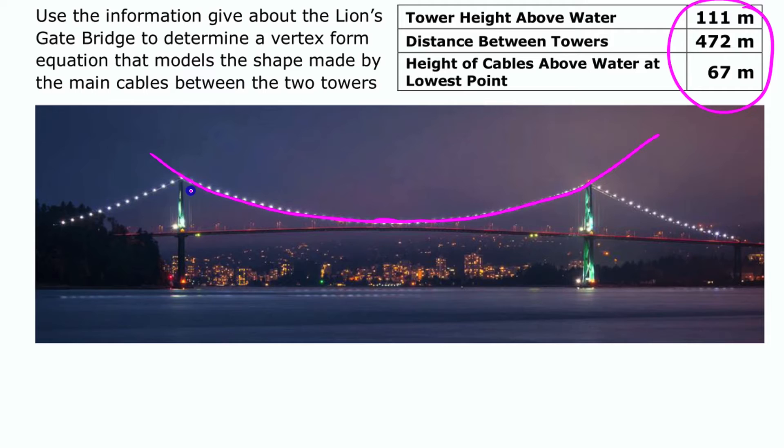Since I want my heights to all be measured from the water up, I'm going to call the surface of the water the x-axis, and I'm going to call one of the towers—this tower right here—the y-axis. Then everything's going to be relative to this point right here. That's my (0,0); this is my origin here.